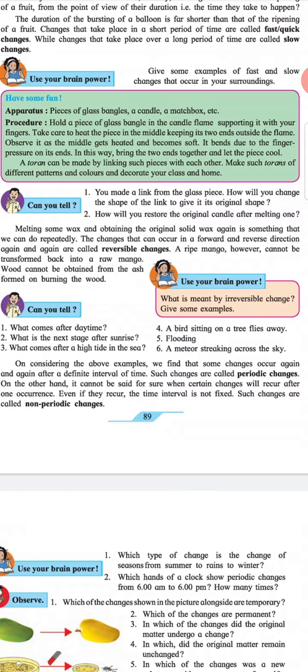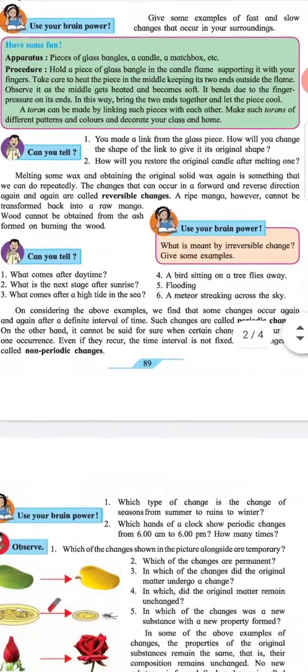On considering the above examples, we find that some changes occur again and again after a definite interval of time. Such changes are called periodic changes. On the other hand, it cannot be said for sure that certain changes will reoccur after one occurrence. Even if they reoccur, the time interval is not fixed. Such changes are called non-periodic changes.